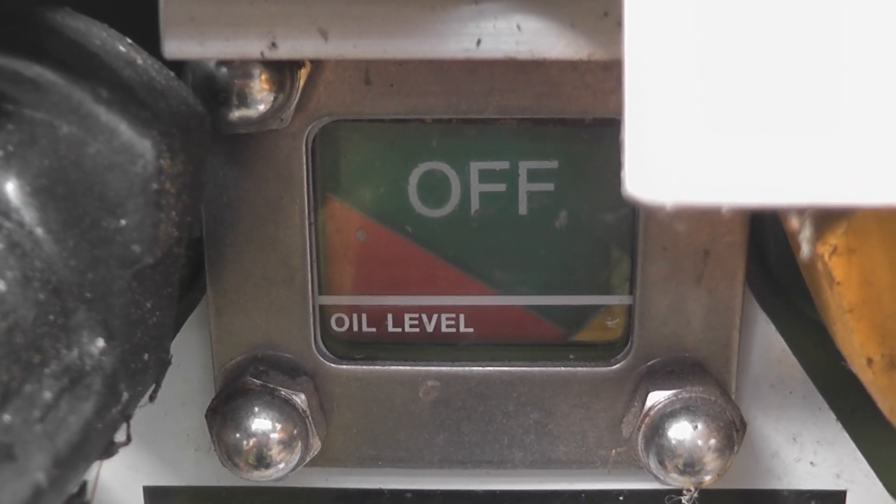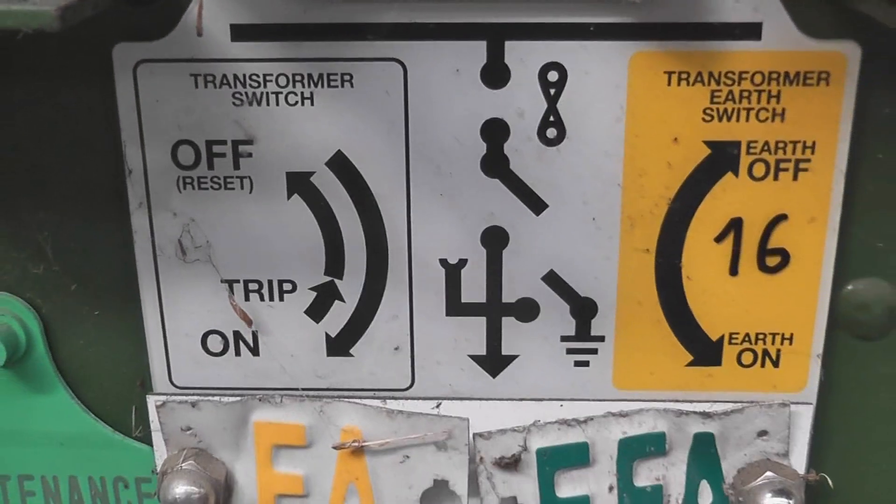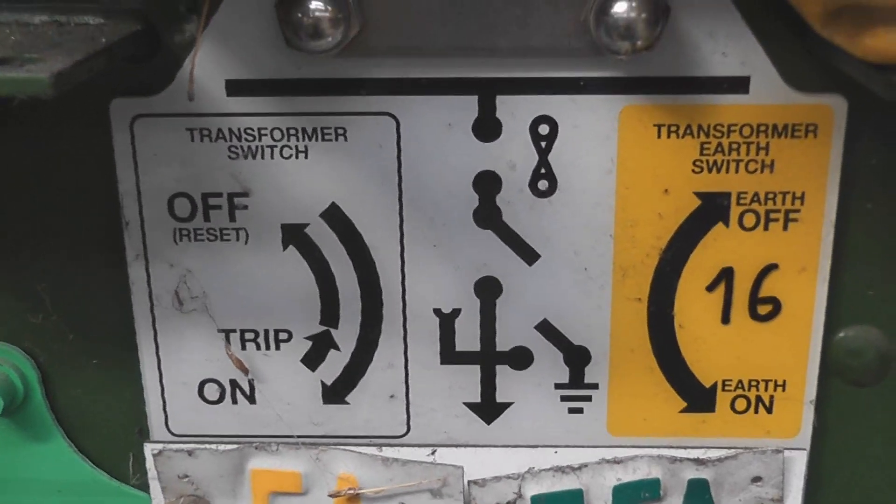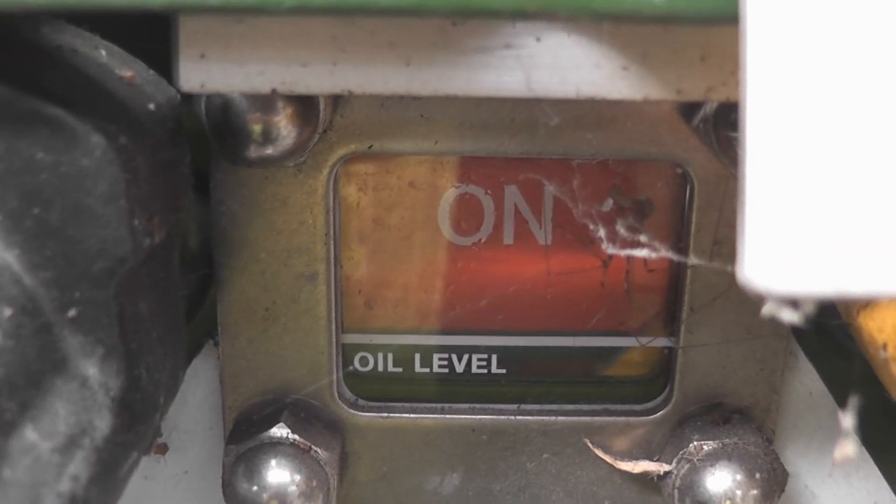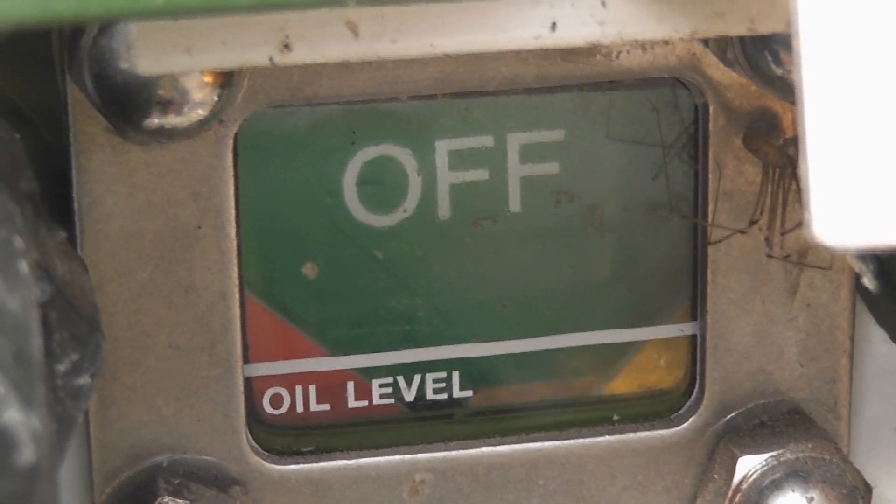This is the status after a tripping event. That means the switch needs to be reset as per the instructions on here. And the switch in a normal closed position shows this particular status. And this is the normal off indication.